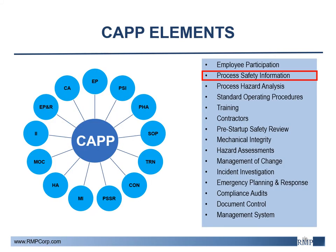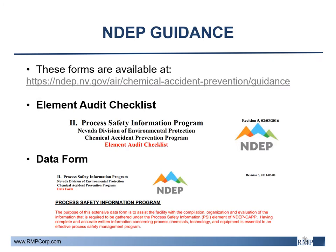This slide displays all the program elements of the Nevada CAP program. In comparison to the EPA's risk management plan or OSHA's process safety management, most of the program elements are redundant. In most cases, this allows regulated facilities to comply with all three regulatory agencies with one program. Today we will be focusing on PSI. All of today's topics are based off of two NDEP-provided documents regarding the PSI program, and are available at the link provided on the slide.